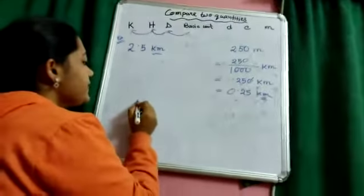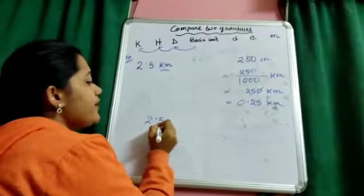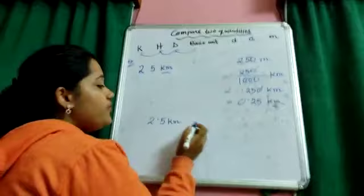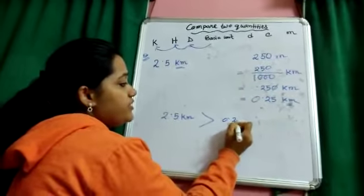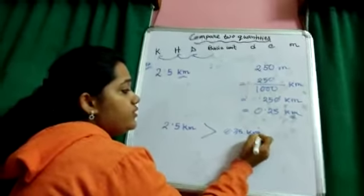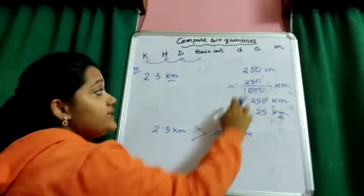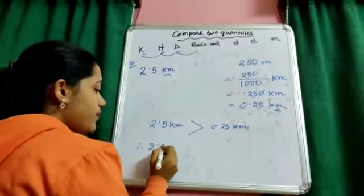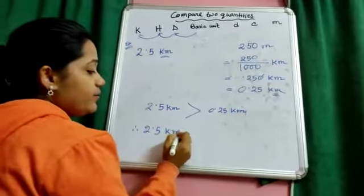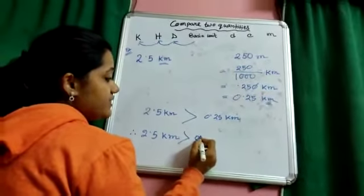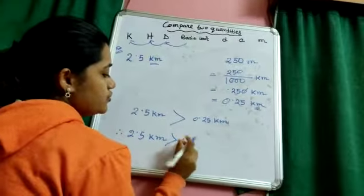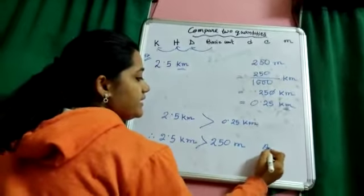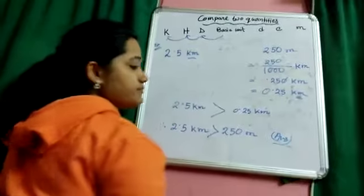2.5, here whole part is 2, and here whole part is 0. So, we can easily compare it as 2.5 kilometer is bigger than 0.25 kilometer. And 0.25 kilometer is nothing but 250 meter. Therefore, 2.5 kilometer is bigger than 250 meter. That is the answer.